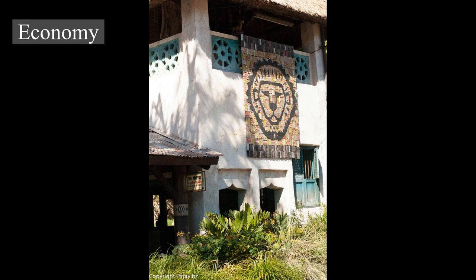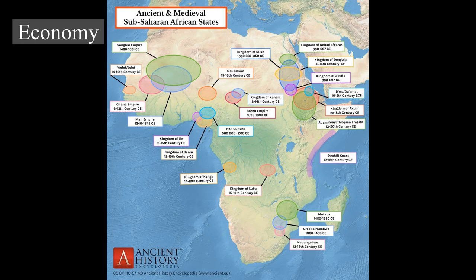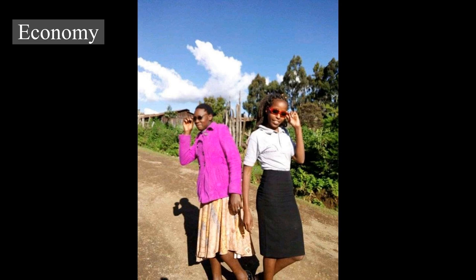Poverty, illiteracy, malnutrition, and inadequate water supply and sanitation, as well as poor health, affect a large proportion of people in Africa. In August 2008, the World Bank announced revised global poverty estimates based on a new international poverty line of $1.25 per day. 81% of the sub-Saharan Africa population was living on less than $1.50 PPP per day in 2005, compared with 86% for India. Sub-Saharan Africa is the least successful region of the world in reducing poverty.